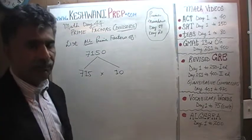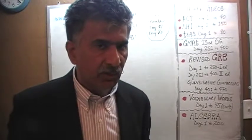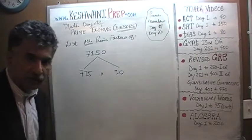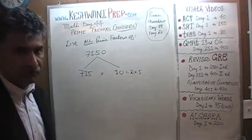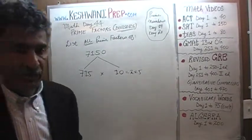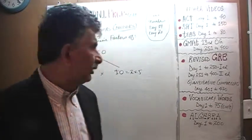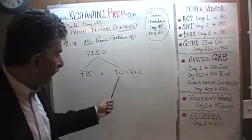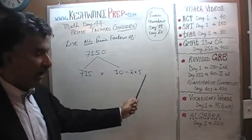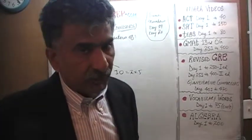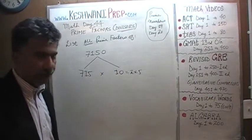Instead of carrying 7,150 and trying to find its factors — which will take forever — we chop it up into two parts. 10 is very simple. The prime factors of 10 are simply 2 and 5. Of course 10 also has a factor of 1, and every number can be divided by itself. So all factors of 10 are 1, 2, 5, and 10. But we are only interested in the prime factors of 10, which are 2 and 5.